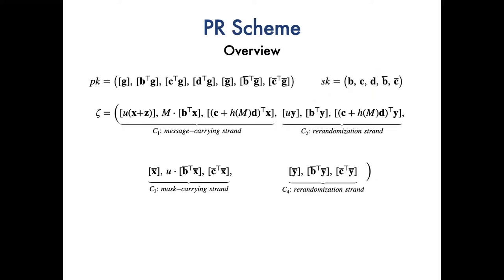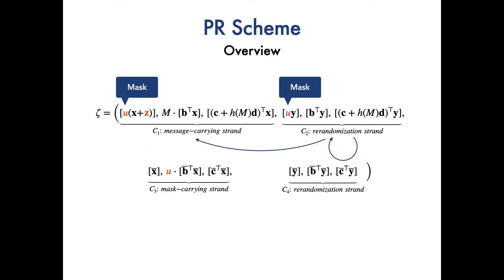To explain why the PR scheme does not satisfy receiver anonymity, we review the scheme briefly. The ciphertext of the PR scheme is composed of four strands. The strand C1 carries the message, while the strand C2 is to help randomize C1 without public key. The encrypted mask U shared between C1 and C2 disables the adversary to mix together strands from two different ciphertexts to obtain a valid ciphertext. The exponents of strand C1 are perturbed by an additional vector Z to restrict the manner of recombining those two strands.